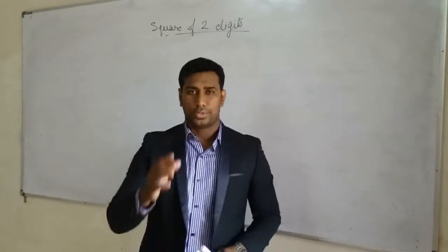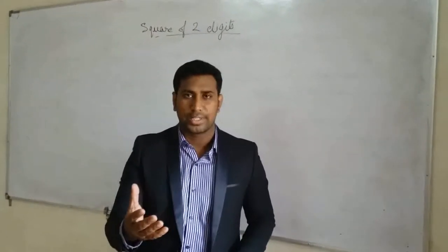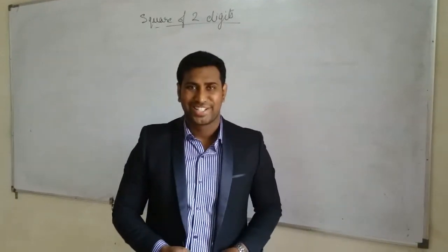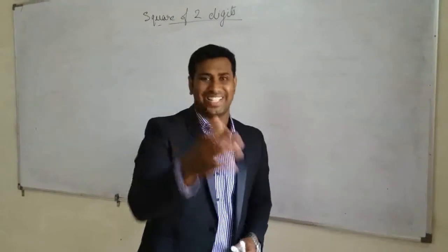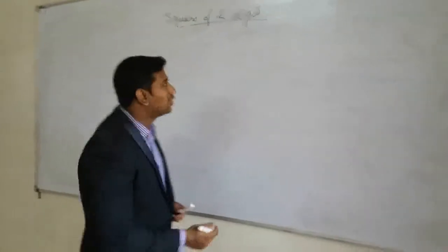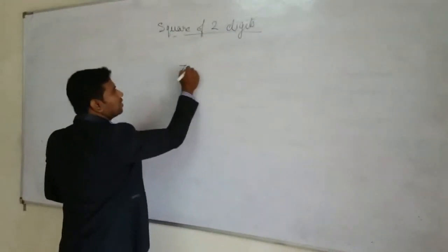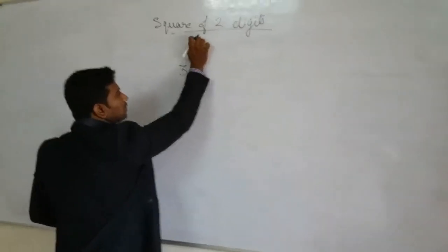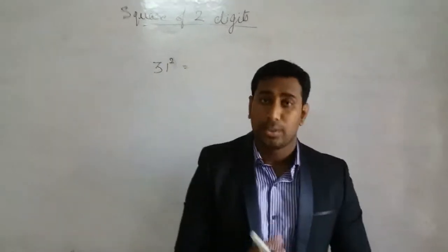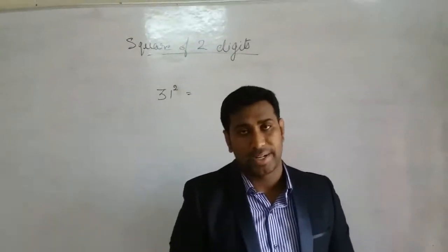So dear students now we are going to see that how to find square of two digit numbers in three seconds only. So are you ready? So let us see that how to find square of two digit numbers in three seconds only. So let us at first consider a number, 31 square. So how to find square of 31.